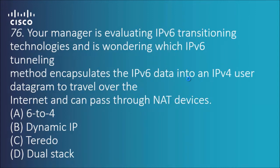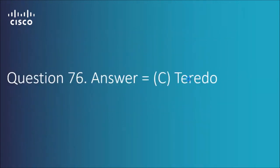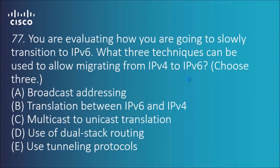Question 76: your manager is evaluating IPv6 transitioning technologies and wants to know which IPv6 tunneling method encapsulates IPv6 data into an IPv4 datagram to travel over the internet and can pass through NAT devices. The answer is C — Teredo. Quite simply, Teredo is an IPv6 tunneling protocol used to encapsulate IPv6 into IPv4 packets that can travel over the IPv4 internet.